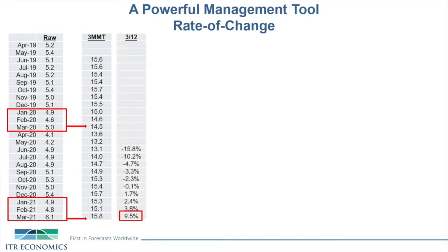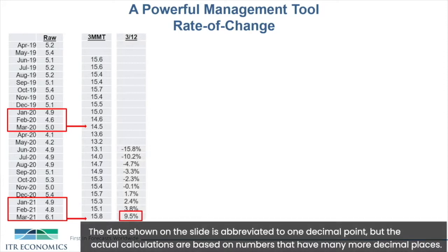But I don't want to stop there. Once I have this monthly total, I can calculate my first rate of change. I call that a 3-over-12 rate of change. The 3 stands for three months of data, and over 12 means I'm always comparing back 12 months, or one year. So in this example, I'll take my March 2021 three-month moving total and compare it back to the March 2020 3MMT. This tells me that, if this is my business, I sold 9.5% more in the last three months than I did in the same three months one year ago.